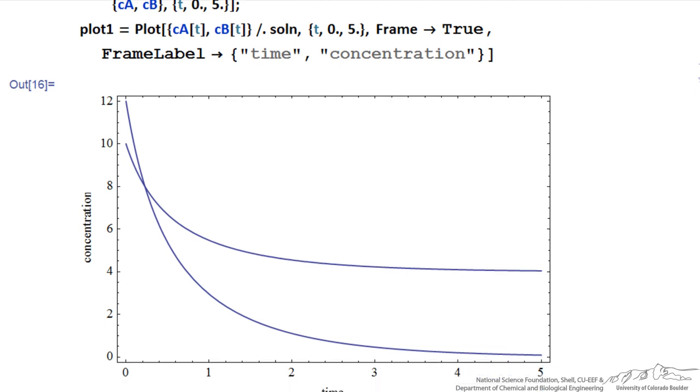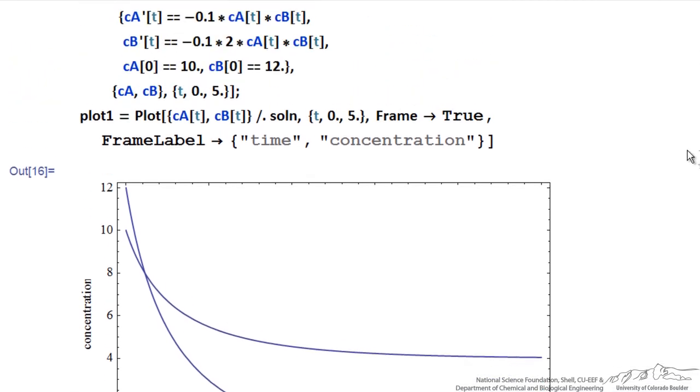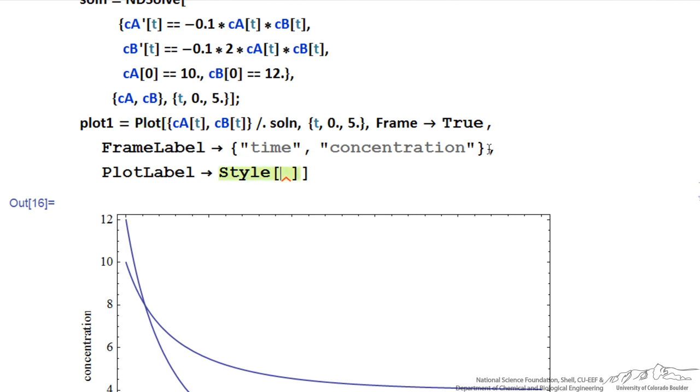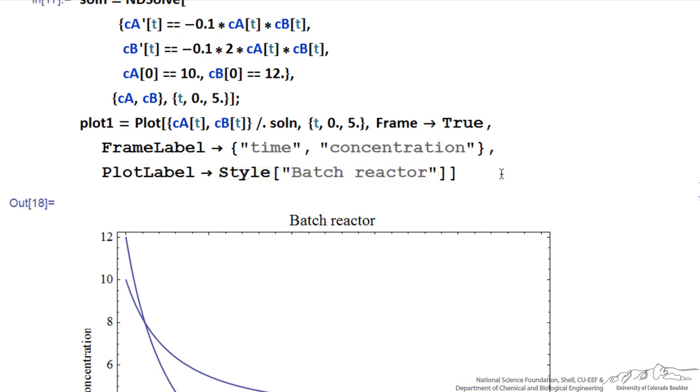You can also put a title, essentially, a label for this frame, again within the plot command, another comma, and the command is plot label, again the arrow, style, and then square brackets for function. So what I want to show up is in quotes, and I'm just going to call this batch reactor. Hitting shift enter, I create a label on the top.